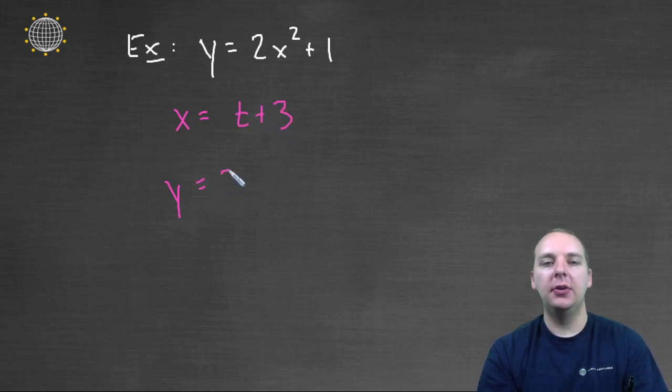Well in this case you'd have 2x squared plus 1, but in this case x is t plus 3.